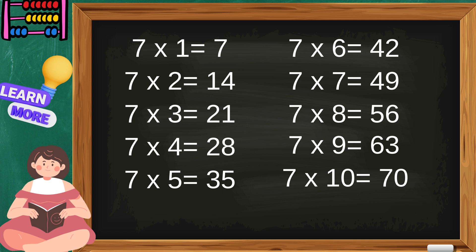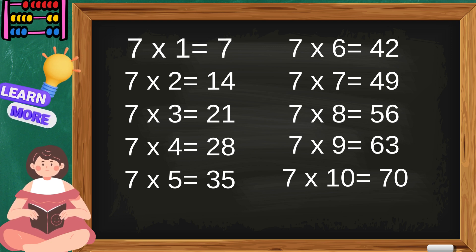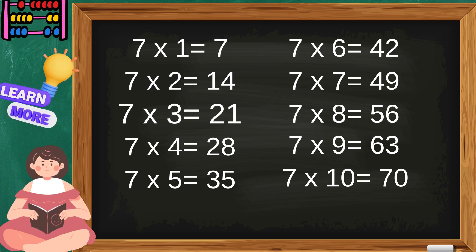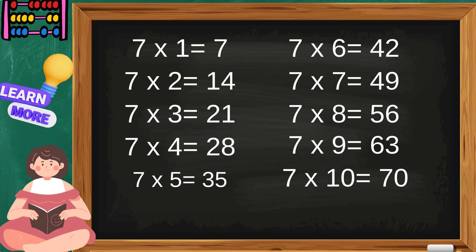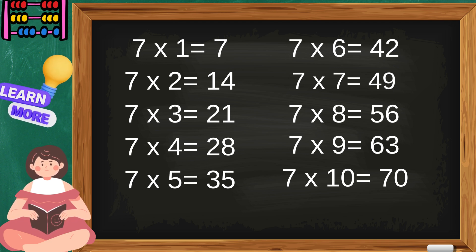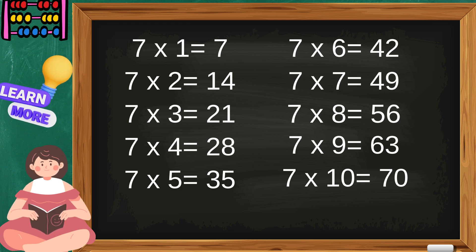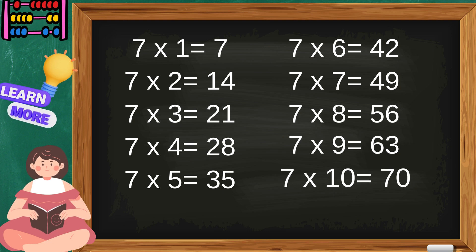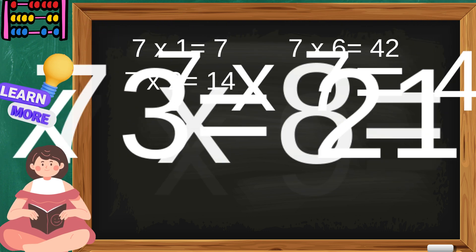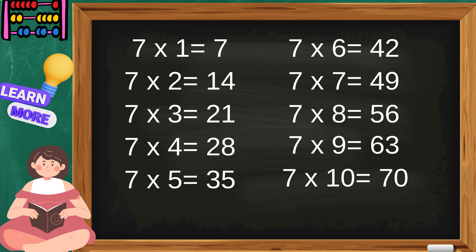Come on children, sing the table of seven. Seven ones are seven, seven twos are fourteen, seven threes are twenty-one, seven fours are twenty-eight, seven fives are thirty-five, seven sixes are forty-two, seven sevens are forty-nine, seven eights are fifty-six, seven nines are sixty-three, seven tens are seventy. That was the table of seven.